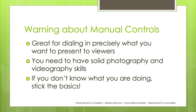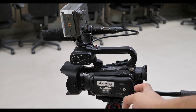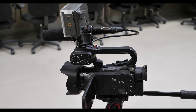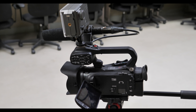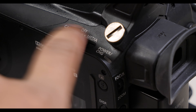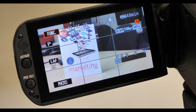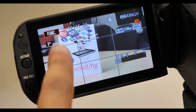Warnings aside, let's jump right into it. Let's start with the exposure. You've set up the camera the way I taught you in the first video. Go ahead and turn on the camera by pushing the toggle button on the left side of the camera forward to camera. The first thing we're going to do is manually adjust the exposure.